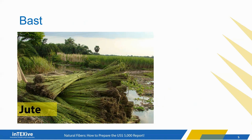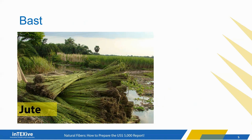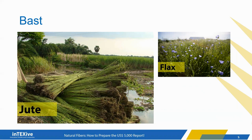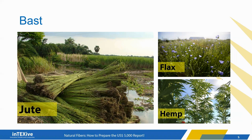Examples of bast fibers include jute, which is primarily grown in Bangladesh and India and is considered the second most abundant natural fiber after cotton. Flax, where the fibers are extracted from the plant stems, is sometimes referred to as linen and is mostly grown in France. Archaeological evidence confirms that flax was the first fiber used in human history. The third example is hemp, which belongs to the cannabis family. Its association with marijuana led to a wide ban on cultivating it worldwide, but recently there has been increasing interest in hemp, especially in the U.S. and Europe, because of its exceptional characteristics. Other less popular bast fibers are ramie and kenaf.